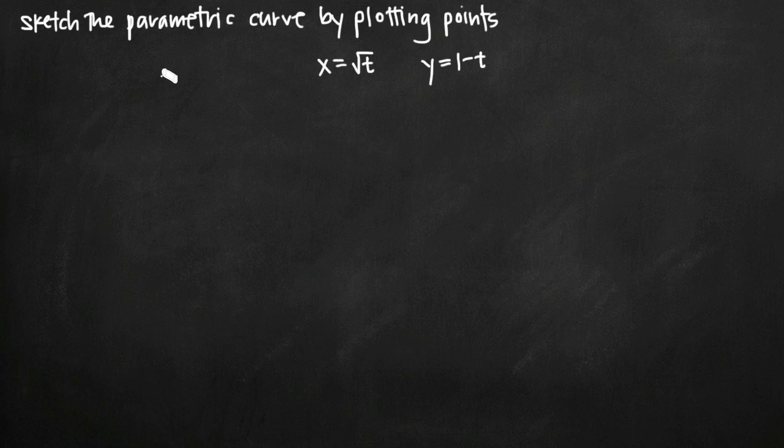When we're going to sketch a parametric curve by plotting points along the curve, the first thing we want to do is identify points that we can plot. The way that we're going to do that is find an xy coordinate point for different values of t. So we want to make a chart where we have t in the top row, and then for different values that we pick for t, we're going to find different values for x and y.